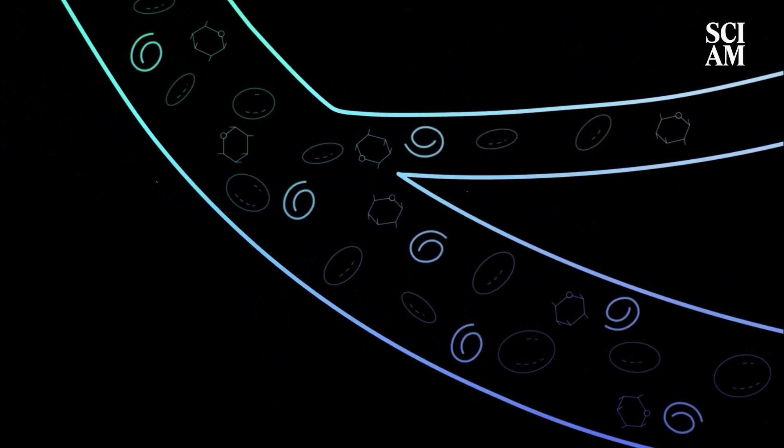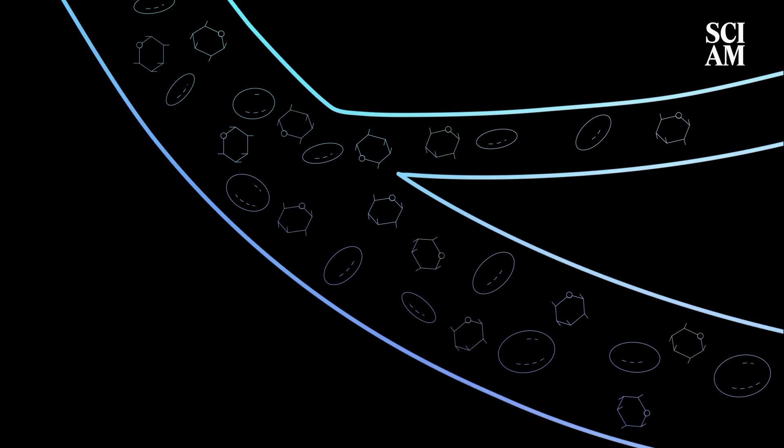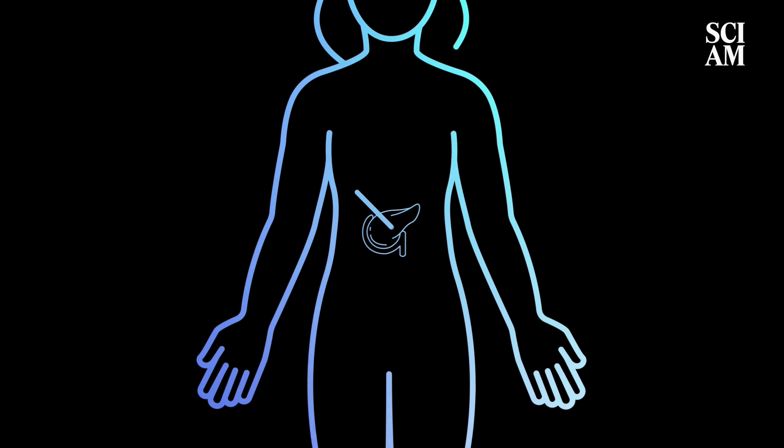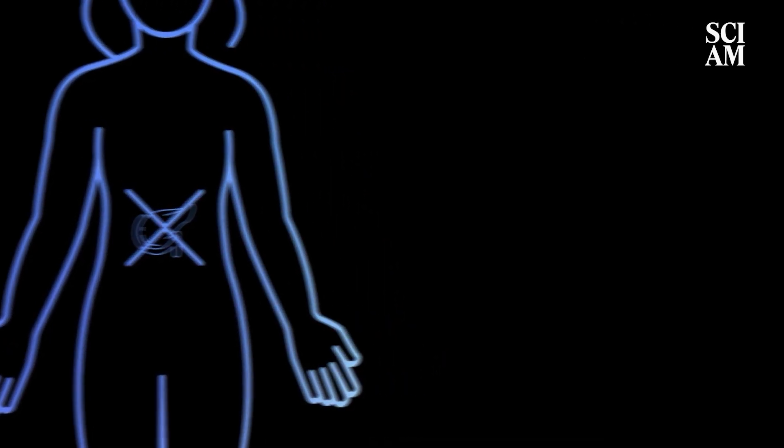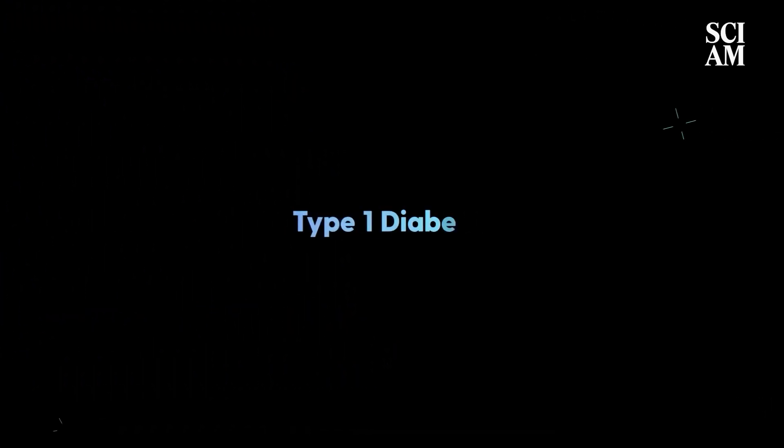When the pancreas stops producing insulin, glucose doesn't enter our cells. Instead, it accumulates in the bloodstream. In some people, the pancreas stops making insulin altogether. This condition is known as type 1 diabetes.